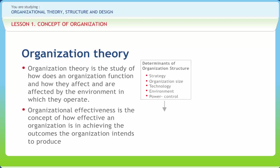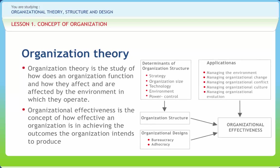Organizational effectiveness is the concept of how effective an organization is in achieving the outcomes the organization intends to produce. The term is often used interchangeably with organization development, which is done through better management of organization structure, design, and people. Organization structure is defined as the established pattern of relationships among the components of the organization — the network of relationships among individuals and positions. Organizational design refers to the process of coordinating the structural elements of organizations most appropriately, with contemporary design emphasizing environmental factors.